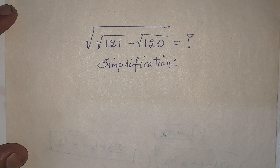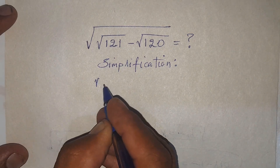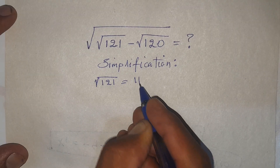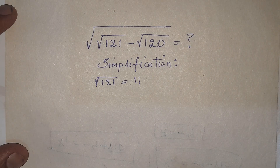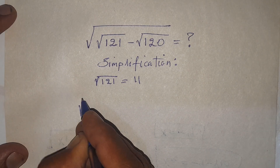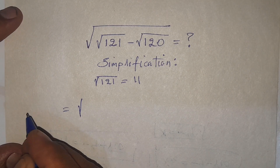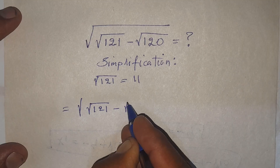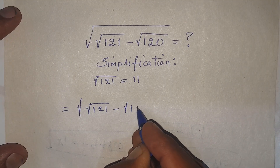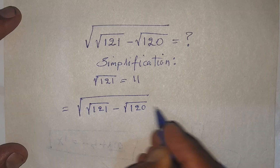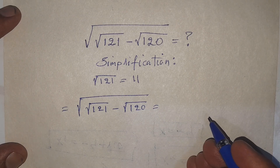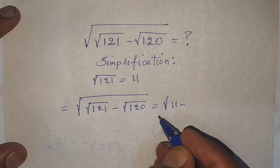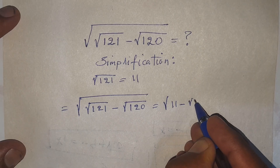For simplification, the square root of 121 is equal to 11. So this expression equals square root of 11 minus square root of 120.